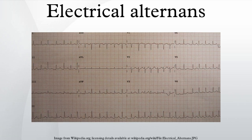Electrical alternance is an electrocardiographic phenomenon of alternation of QRS complex amplitude or axis between beats and a possible wandering baseline. It is seen in cardiac tamponade and severe pericardial effusion and is thought to be related to changes in the ventricular electrical axis due to fluid in the pericardium, as the heart essentially wobbles in the fluid-filled pericardial sac.